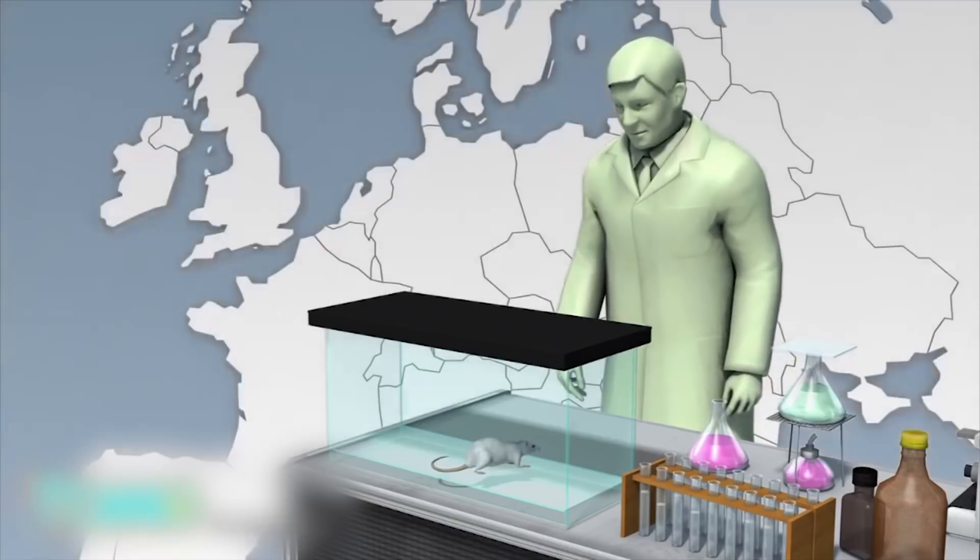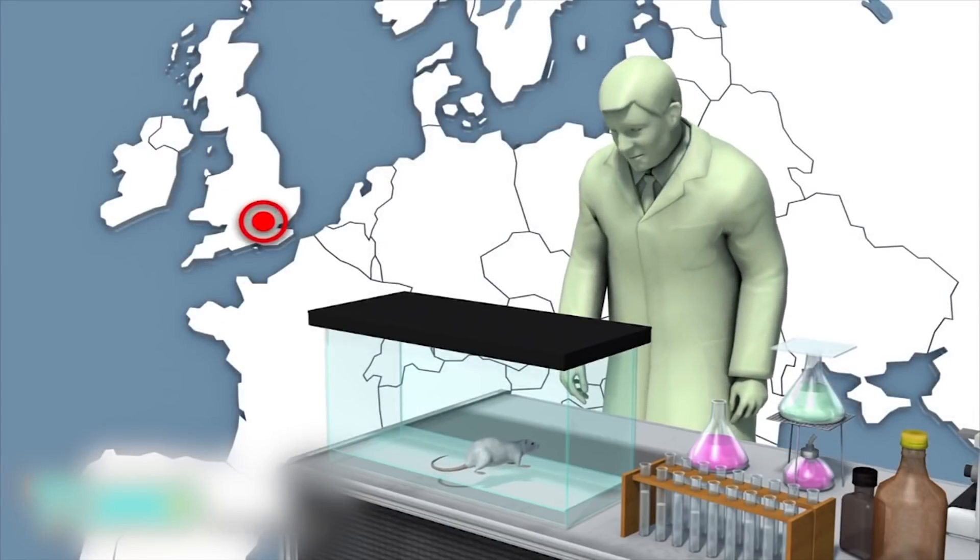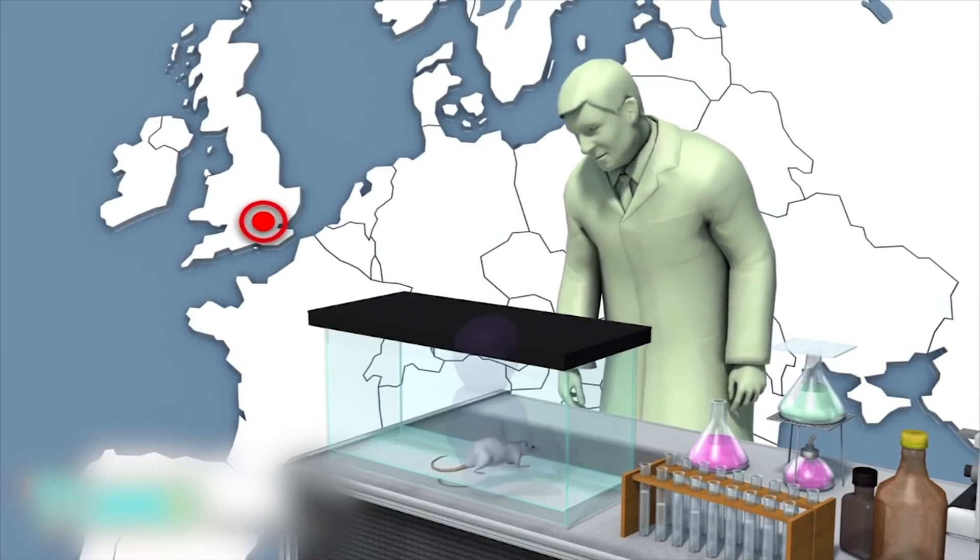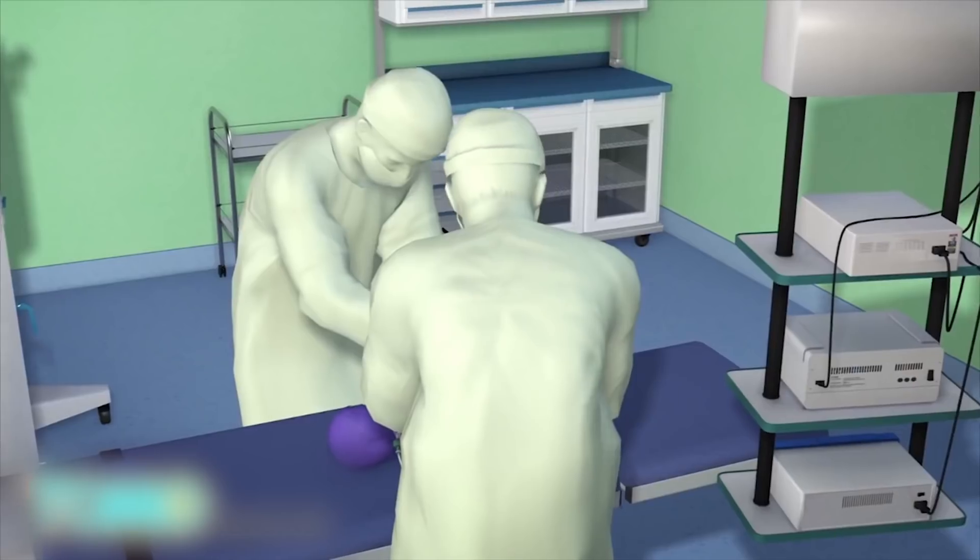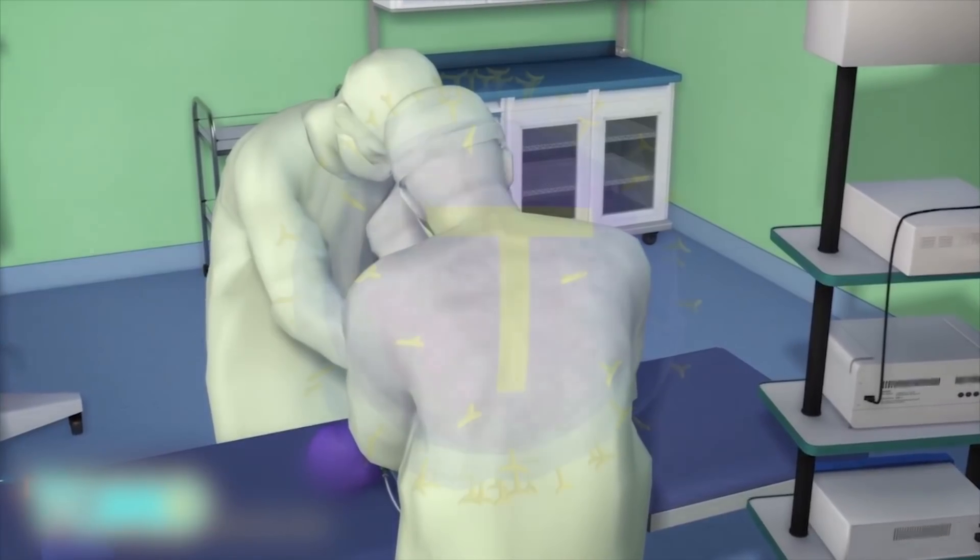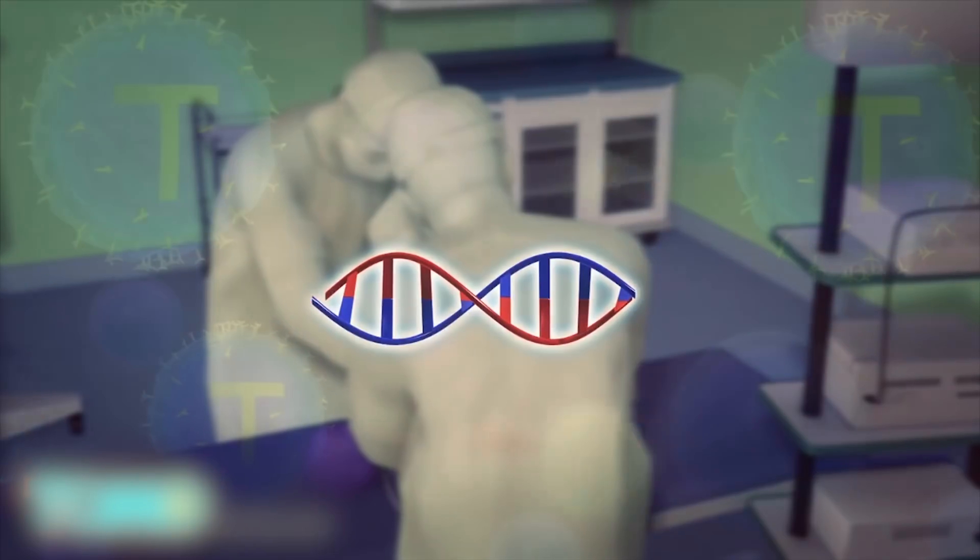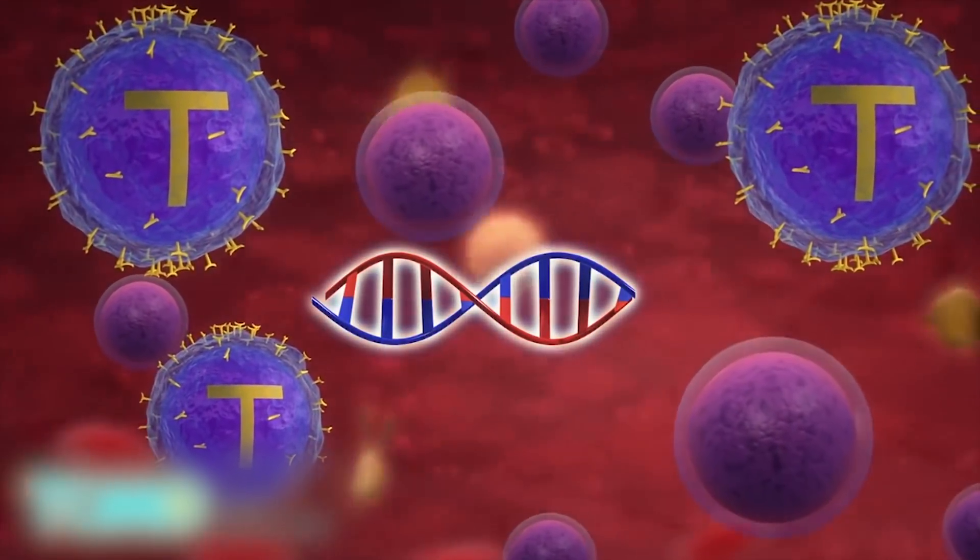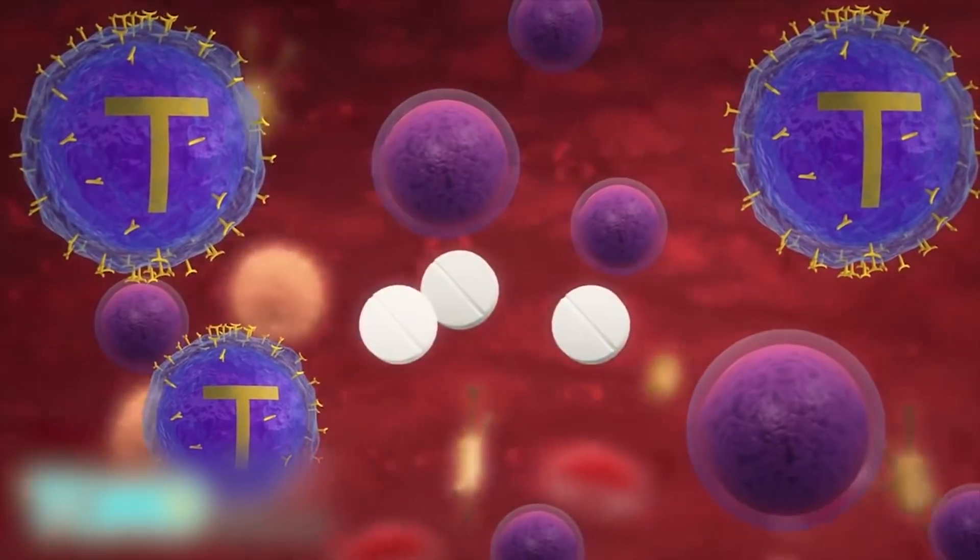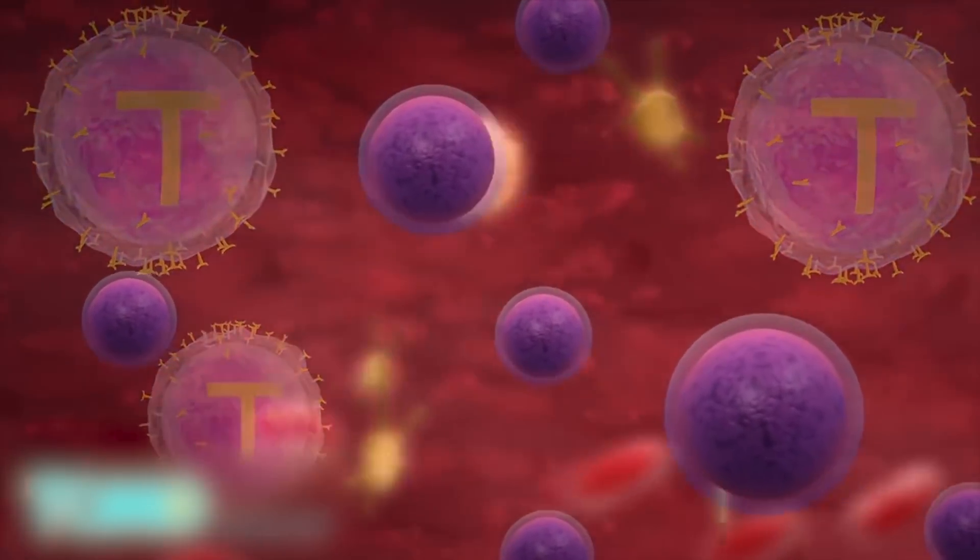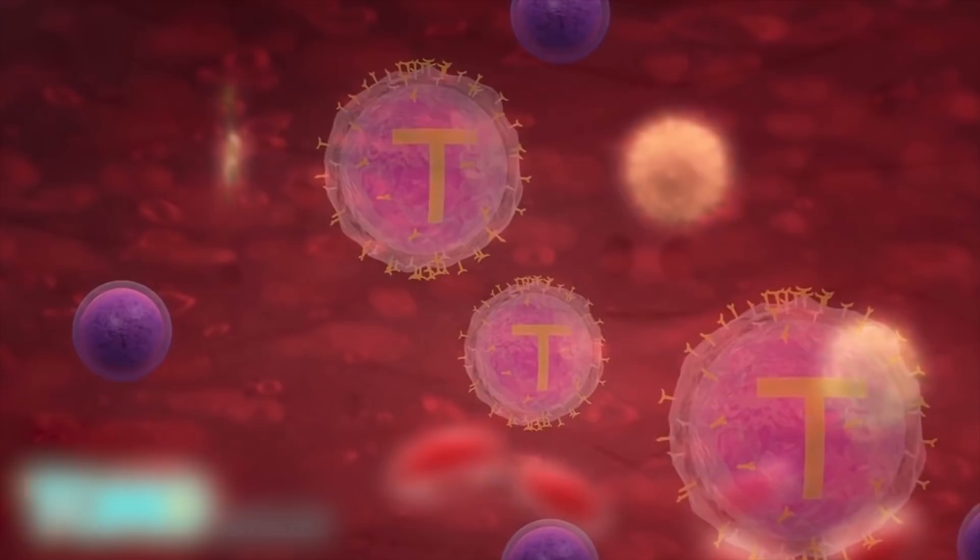Doctors in London performed a new gene-editing technology known as TALEN on Layla, which had previously only been tested on mice. The technology uses molecular tools that act like scissors to cut specific genes in order to make T cells from healthy donors behave in two specific ways. First, the cells are able to become invisible to a powerful leukemia drug that would normally kill them. Second, they are reprogrammed to target and fight against leukemia cells only.